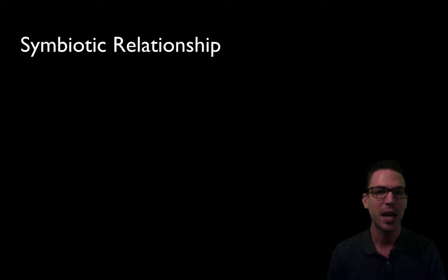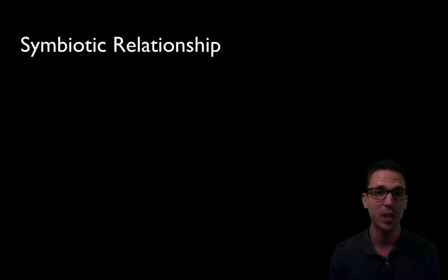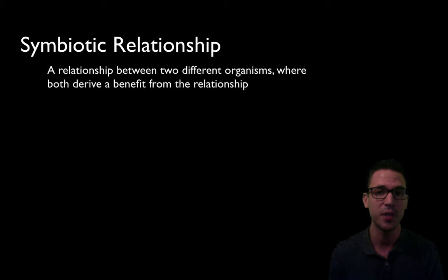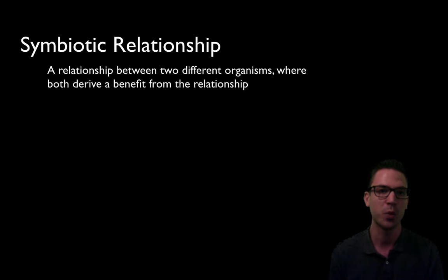When we talk about a symbiotic relationship or symbiosis, there are two definitions you might come across. One popular definition treats it as an umbrella term for any relationship between two organisms regardless of who benefits. For this course, however, we use symbiotic relationship to mean specifically a relationship between two organisms of two different species where both derive a benefit. This is sometimes called mutualism, but for this course we'll call it symbiosis.